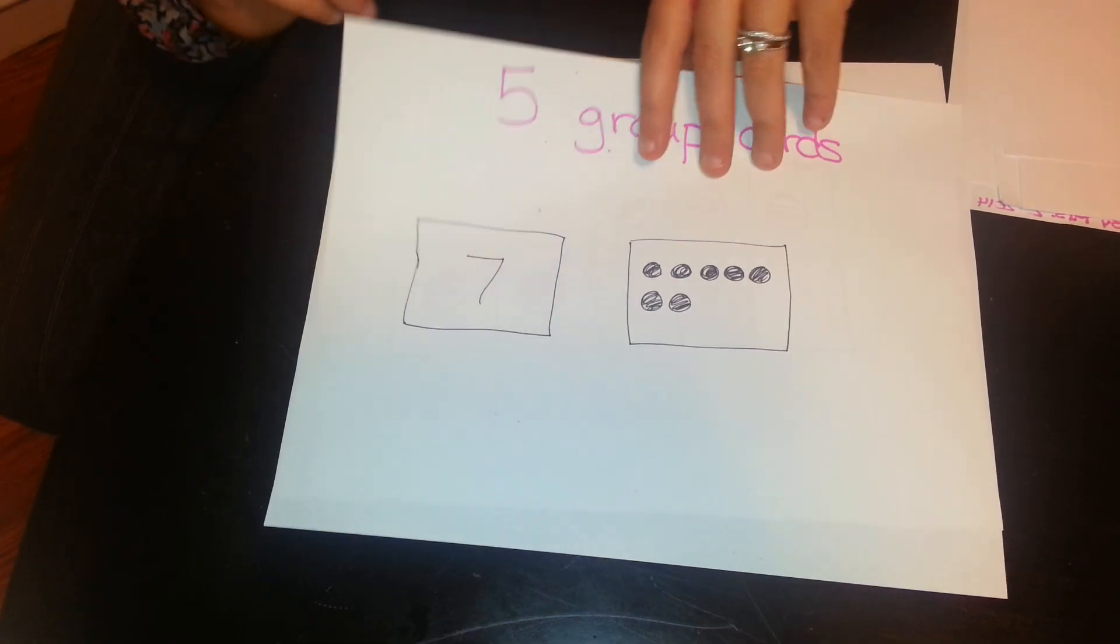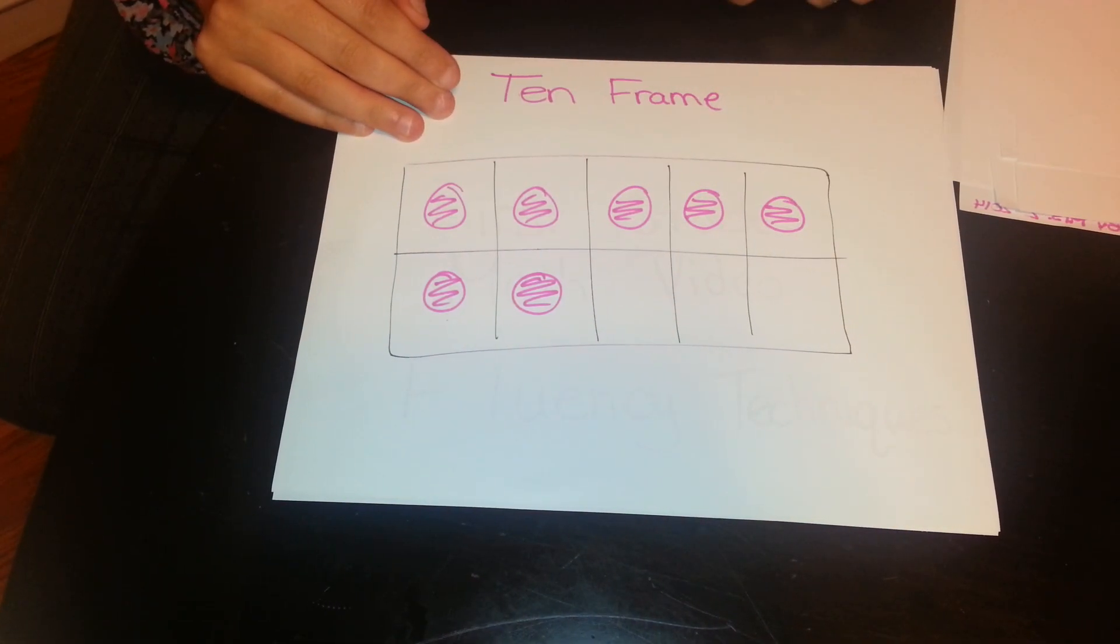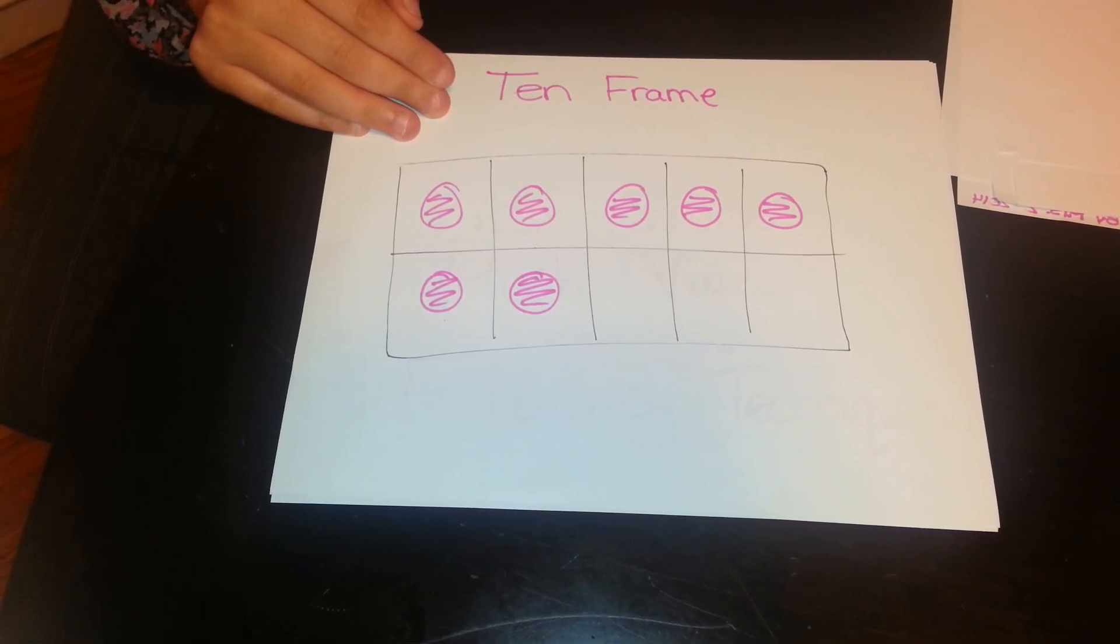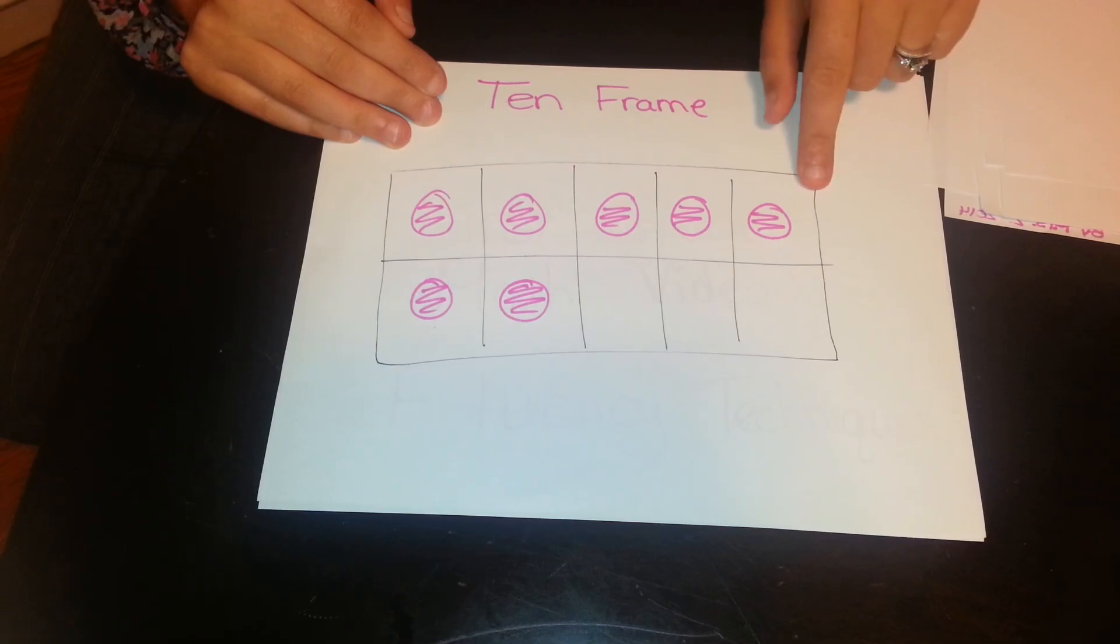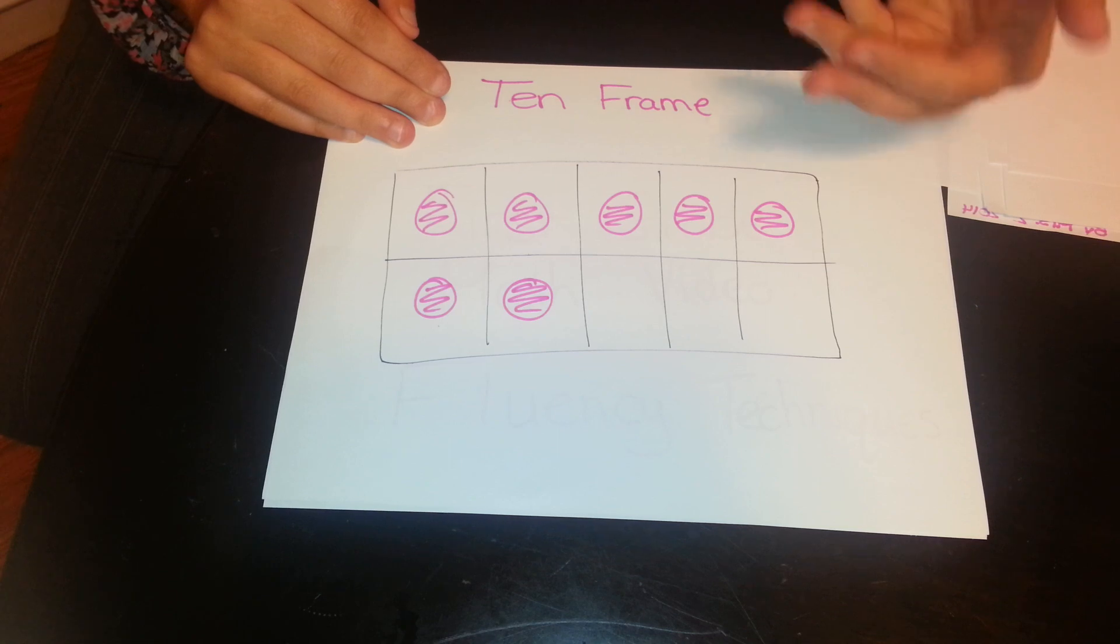That'll help us later in the year when we're working on 10 frames. You can see it's set up exactly the same way as the 5 group card just with the lines. So again, if they know that each line is 5, they can visualize that 5 group adding 2 more. 5 plus 2 is 7.